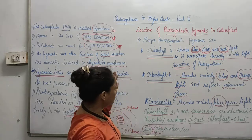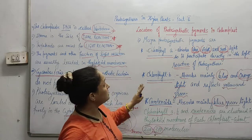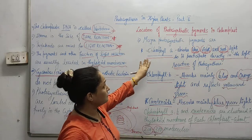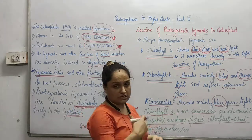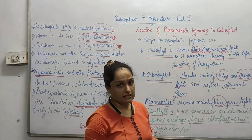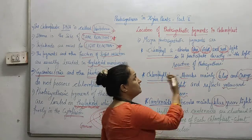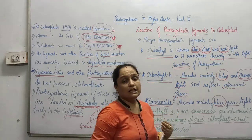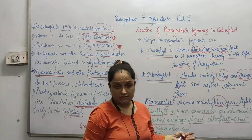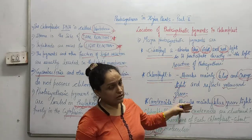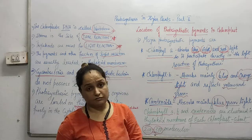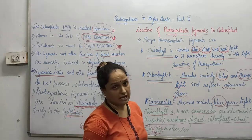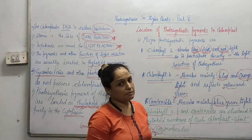So this was about the pigment system, but a few things are still remaining. Those will be covered in the next part — Part 3 of Photosynthesis in Higher Plants.